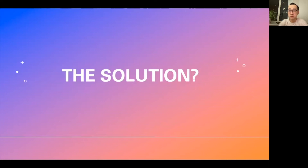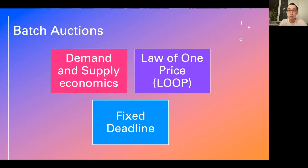The DeFi solution of batch auctions seems to mitigate this quite a bit. With batch auctions, you have demand and supply economics where the final price is determined by the prices people have entered that they're willing to buy a token for. This comes to the idea of the law of one price — there's just one market clearing price. Everyone gets a token at the same price based on whatever amount they committed to the sale, and there's a fixed deadline, so when time runs out, you get your tokens at that fixed price.